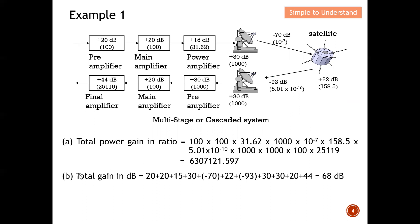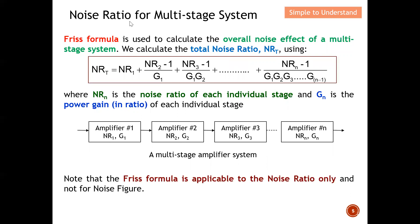Next I'll show how to obtain the total gain in decibel. For decibel, I add all the individual stage values together: +20 +20 +15 +30 −70 +22 −93 +30 +30 +20 +44. From here I can compute the total gain equals 68 dB. You can also verify this by doing 10 log of the ratio result, which should also give 68 dB.